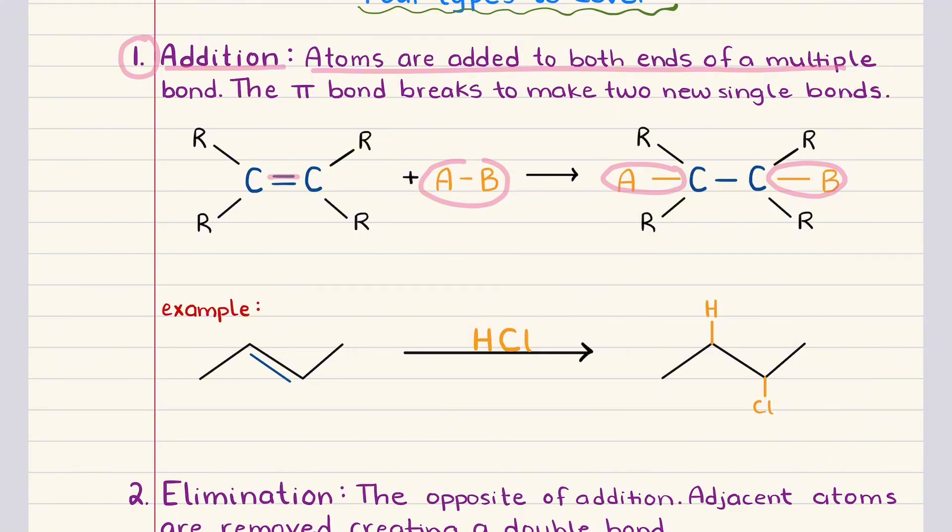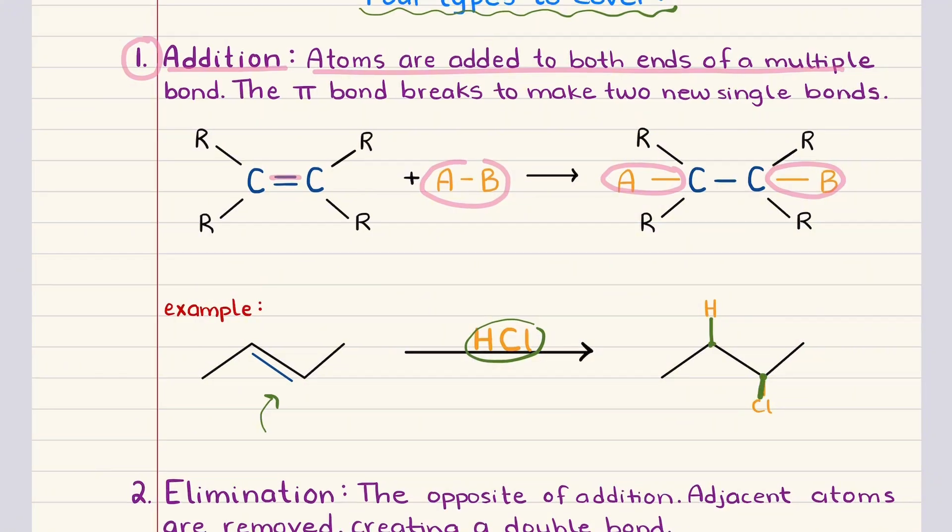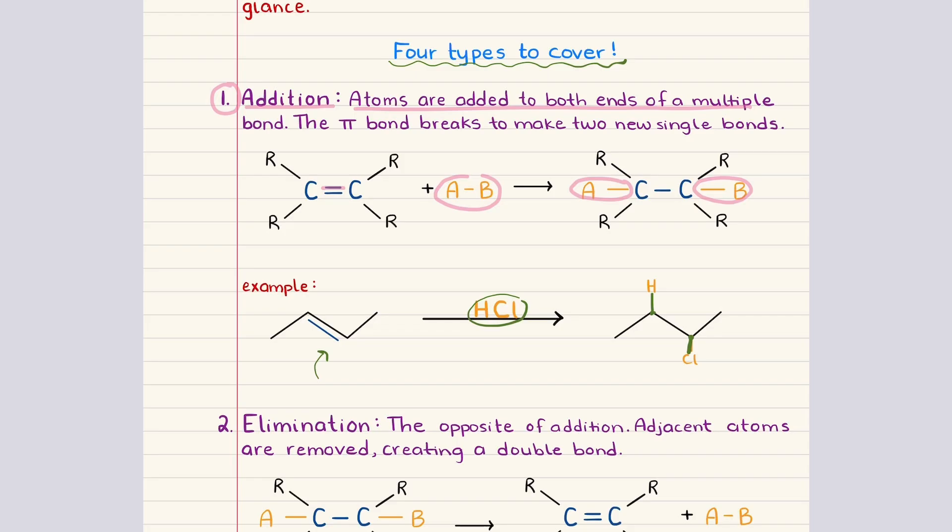The example that's shown here demonstrates this clearly. The alkene reacts with hydrogen chloride, and during the reaction, one carbon bonds to the hydrogen while the other carbon bonds to the chlorine. The double bond disappears, and the product contains two new single bonds. That pattern is characteristic of an addition reaction.